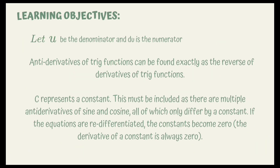Learning Objectives: Let u be the denominator and du is the numerator. Antiderivatives of trigonometric functions can be found exactly as the reverse of derivatives of trigonometric functions. The constant C must be included, as there are multiple antiderivatives of sine and cosine, all of which only differ by a constant. If the equations are differentiated, the constant becomes zero.